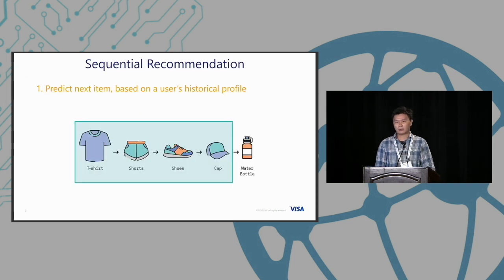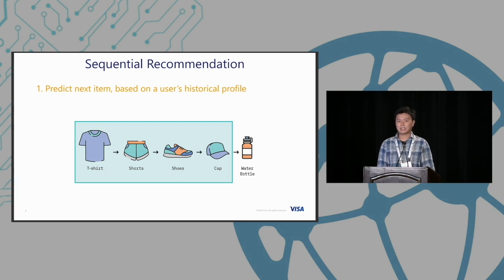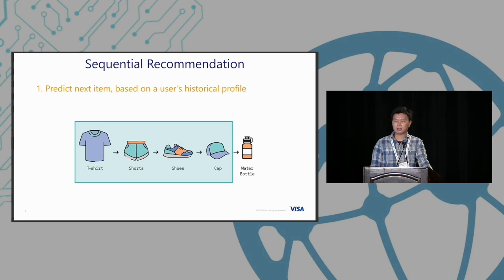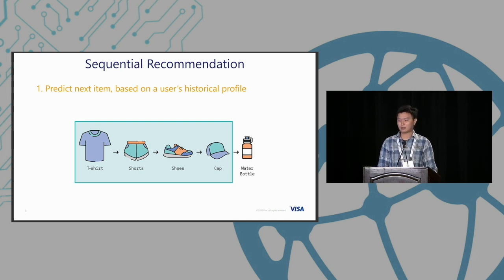Sequential recommendation is a pretty standard problem. We're trying to predict the next item based on a user's history profile. For example, if a user purchased a t-shirt, shorts, or some shoes, we might try to predict if the next item is a water bottle. This is the standard sequential recommendation problem.